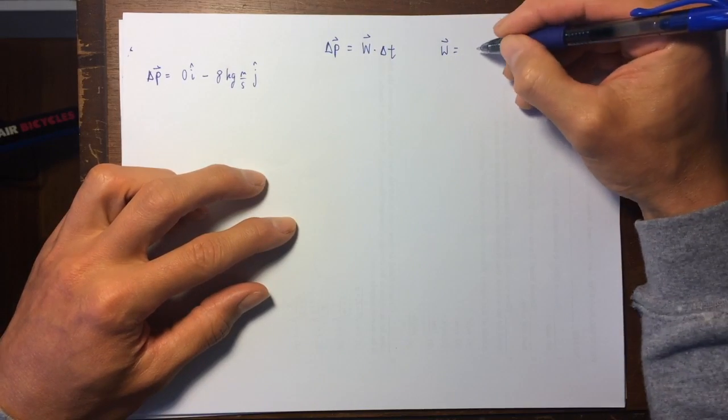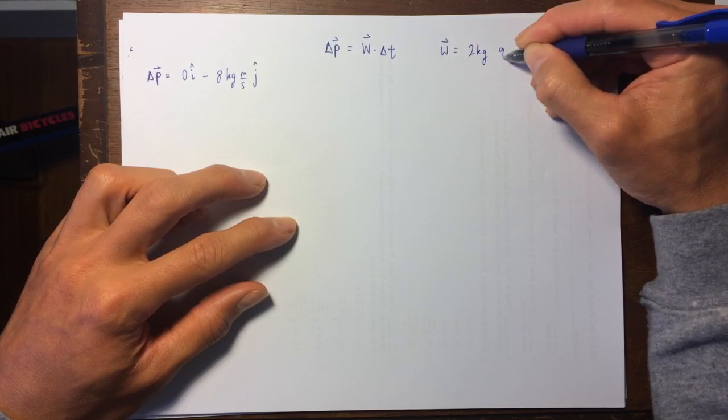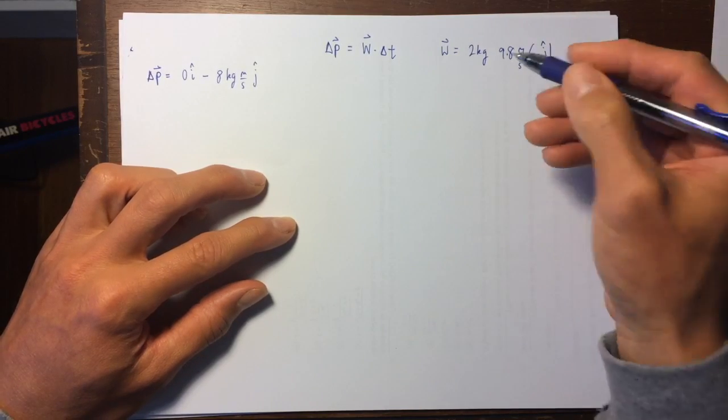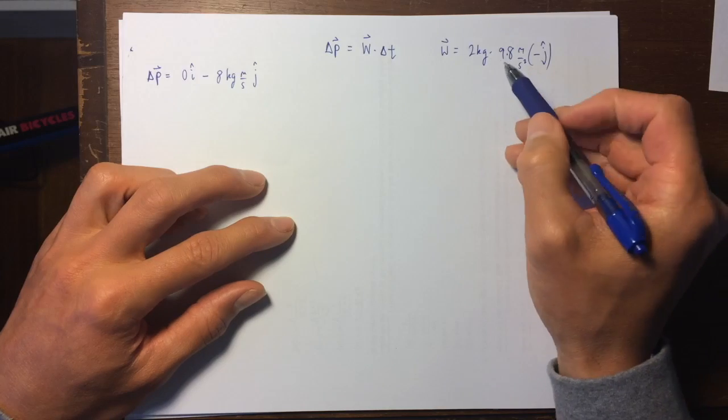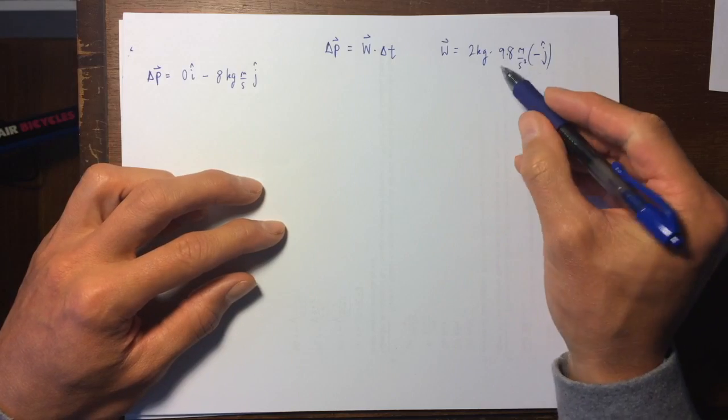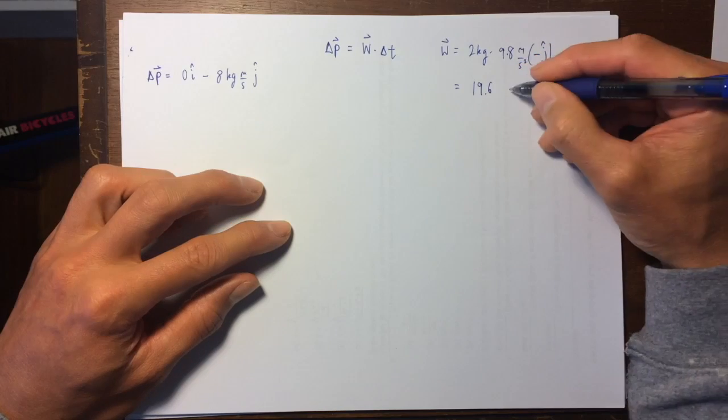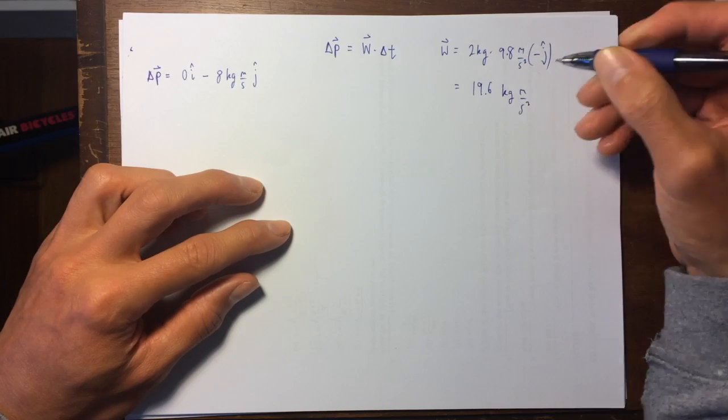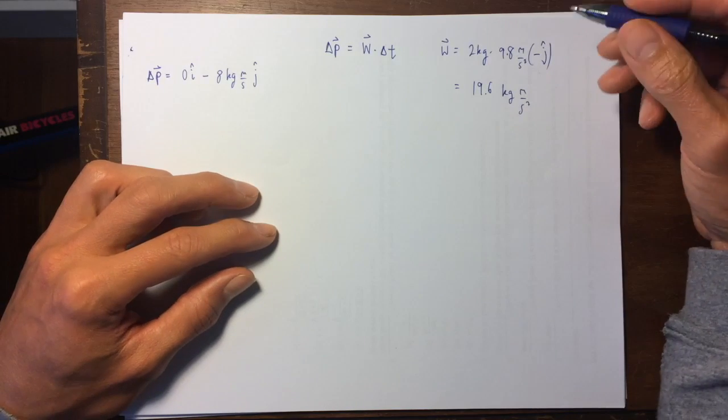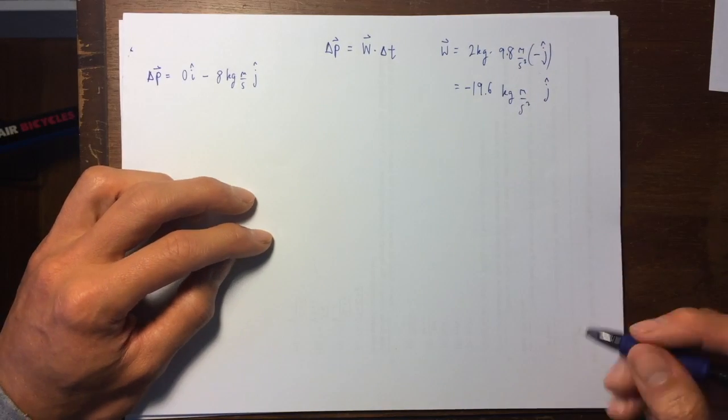So, so here's our goal, delta t. W equals, we'll just go ahead and write it, it's two kilograms times nine point eight meters per second squared minus j hat direction. So two times nine point eight, so nine doubled is eighteen, point eight doubled is one point six, so nineteen point six. So this is nineteen point six kilograms meters per second squared, this is also known as the newton, actually, right, mass times acceleration, it's the newton, with a minus sign and a j hat, like this. So there's w.